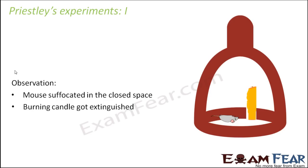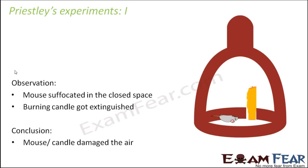Why did the mouse suffocate? Because a mouse is a living organism that needs oxygen — it needs to breathe. When the space was closed, the mouse used up all the available oxygen inside the bell jar. When all oxygen was used up, there was none left, so it suffocated and died. Similarly, a candle needs oxygen for combustion, so it used up whatever was available and then got extinguished. His conclusion was that the mouse and the candle damaged the air — meaning they used up all the oxygen inside the bell jar.